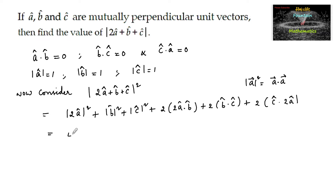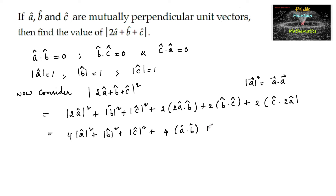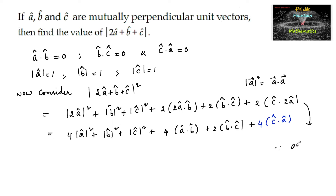Using the expansion, we can write this as 4|â|² + |b̂|² + |ĉ|² + 4(â · b̂) + 2(b̂ · ĉ) + 4(ĉ · â), since the scalar multiplication property gives us λ(a · mb) = λm(a · b).